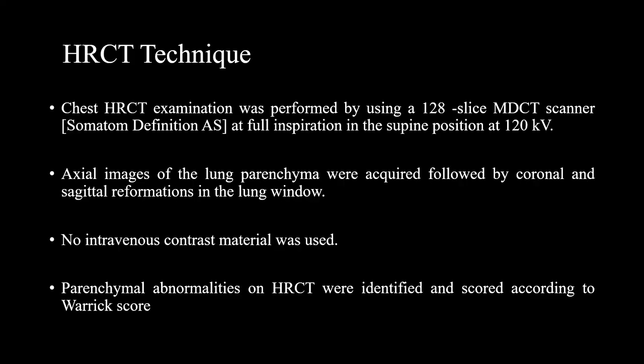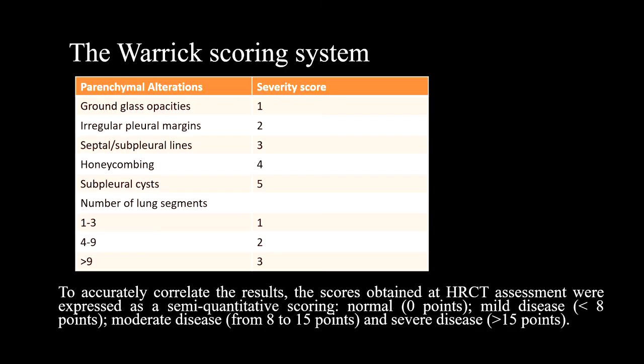Chest HRCT examination was performed using a 128-slice MDCT scanner at full inspiration in the supine position at 120 kV. Axial images of lung parenchyma were acquired followed by coronal and sagittal reformations in the lung window. No IV contrast material was used. Parenchymal abnormalities on HRCT were identified and scored according to the Varic score. The Varic scoring system includes ground glass opacities (score of 1), irregular pleura, interlobular septal thickening or subpleural lines, honeycombing, and subpleural cysts — these five parameters were scored accordingly as shown in the table.